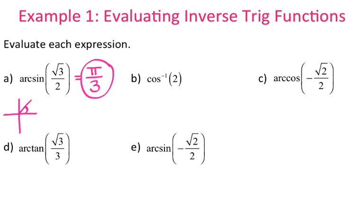You can check this in the calculator. Since all of these angles are in radians, change your calculator mode to radian mode. Hit second sine and type in root 3 over 2. It gives you a decimal, and you can check to see if that decimal is the same thing as pi over 3 — which it is.